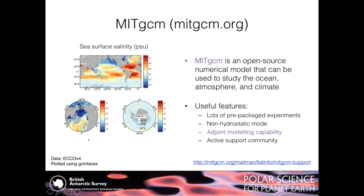This is an example of what has been done with MITGCM: the ECHO project. ECHO is a model run constrained by observations — ship track data, Argo float data, satellite data, and many other sources — producing a dynamically consistent representation of the ocean that's also consistent with those observations. It's useful for forward modeling as well as adjoint modeling.